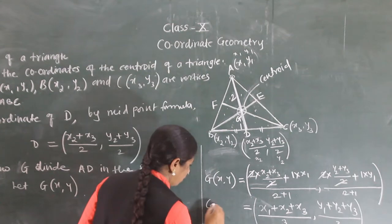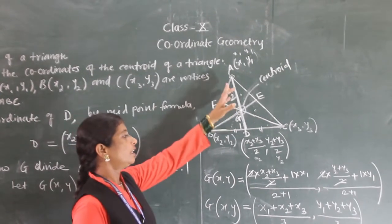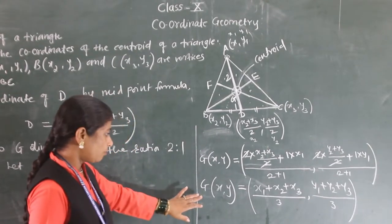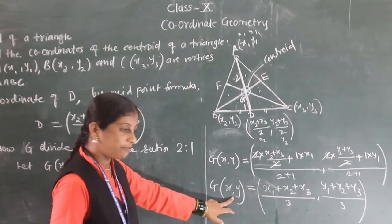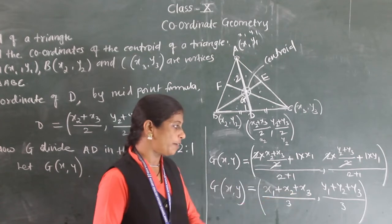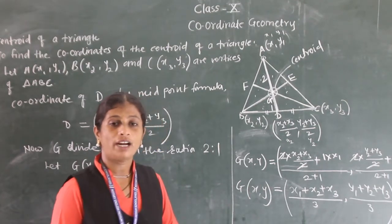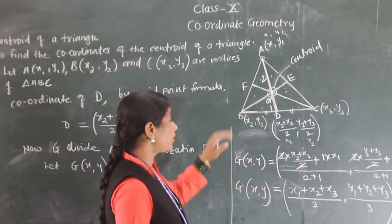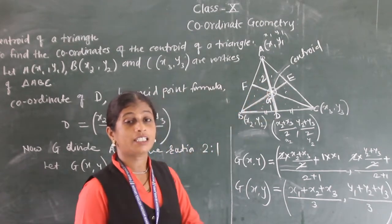These are the coordinates of the centroid. So if G is the centroid and (x, y) are its coordinates, then G equals x1 + x2 + x3 by 3, comma y1 + y2 + y3 by 3. Now in this topic, we will also see what the incenter is. The incenter is the point of intersection of the angle bisectors of a triangle.